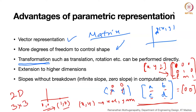In 3D space, the transformation matrix is 4 by 4. Using the vector representation, you can immediately apply all matrix algebra and do operations like translation, rotation, and everything. Since it is a vector, dimensions do not matter - you can go to any dimension. This is one of the great advantages of the parametric representation in vector form.